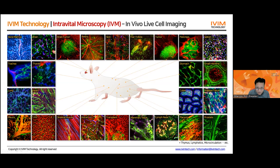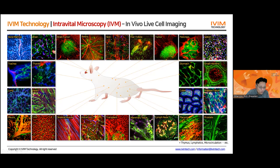In my group and our IVIM Technology company, we have been able to image almost every internal organ and tissue in a live mouse model — including bone marrow, brain, brain tumor, skin, hair follicles, various tumor models, pancreas, spleen, the GI tract, adipose tissue, prostate, lymph nodes, placenta in a pregnant mouse model, mammary tissue, kidney, liver, heart, lung, thyroid, and trachea. This list keeps increasing.